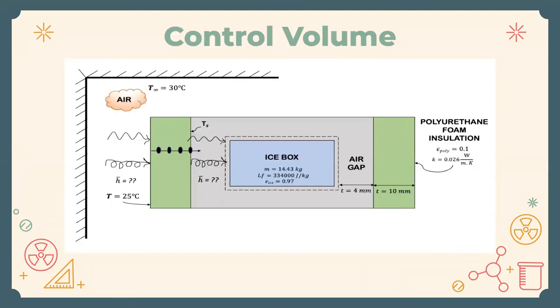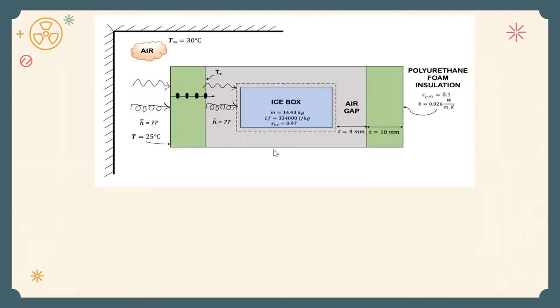This is our control volume. This is the outer surface which is air, followed by the polyurethane thickness, followed by the air gap, followed by the ice box. This ice box inside contains the vaccine box, which is designed in a manner so as to be able to store 500 doses of vaccines. We will now focus our attention on every part of the evaporator and calculate the necessary quantities that we require.